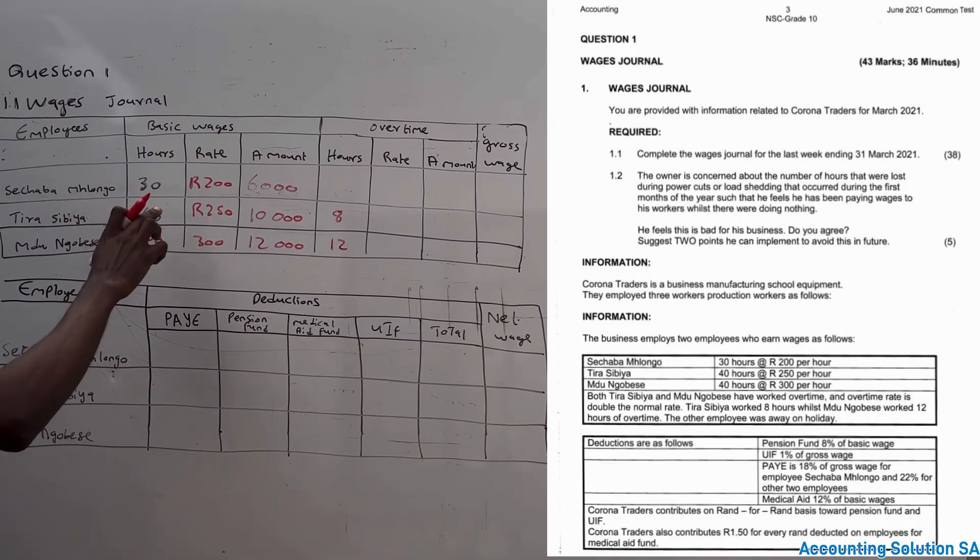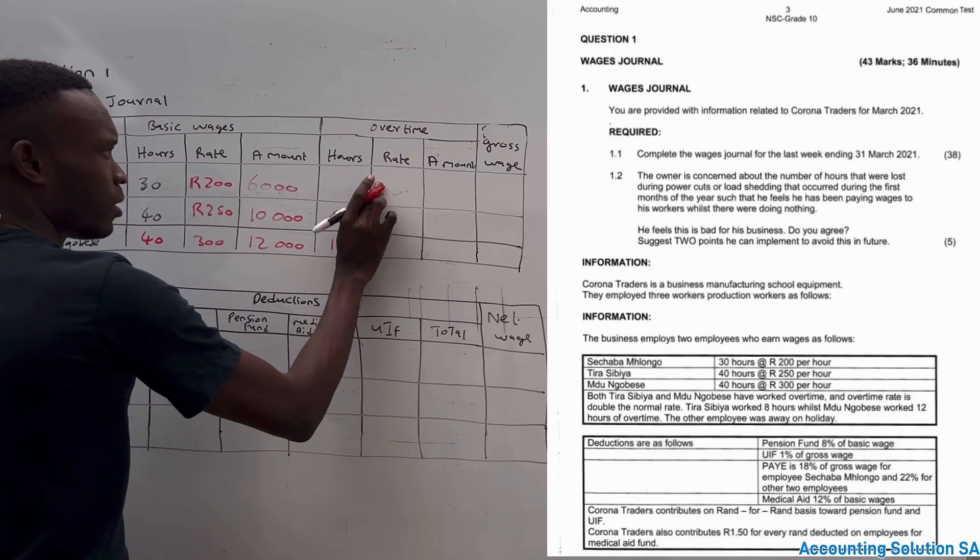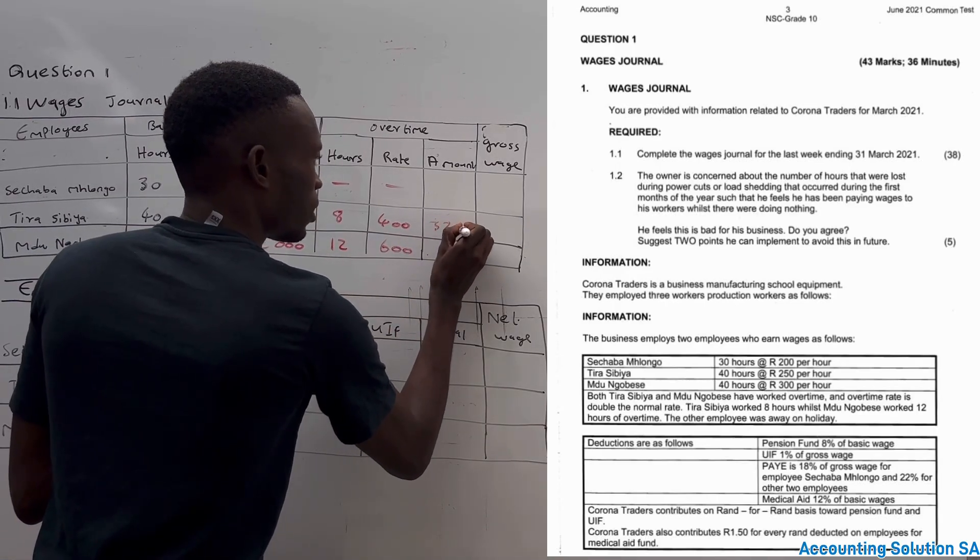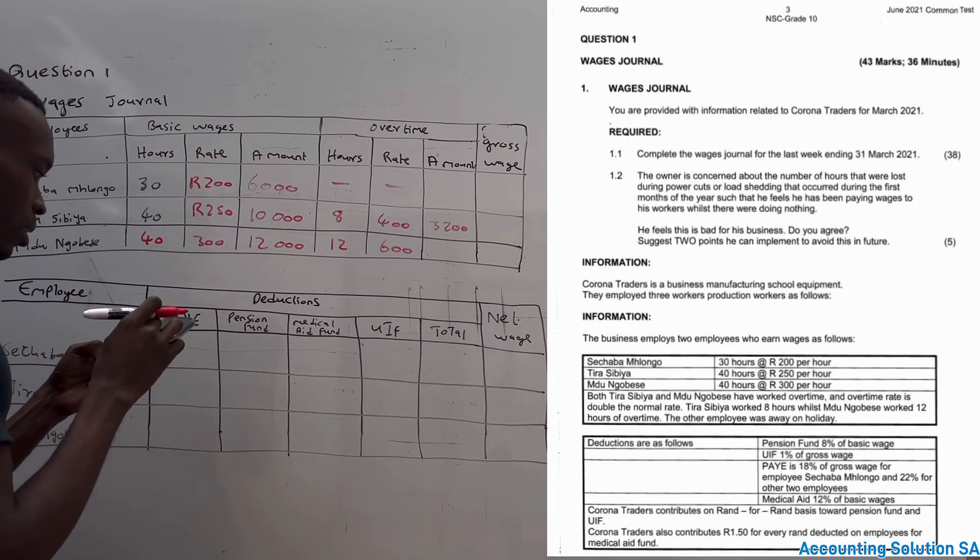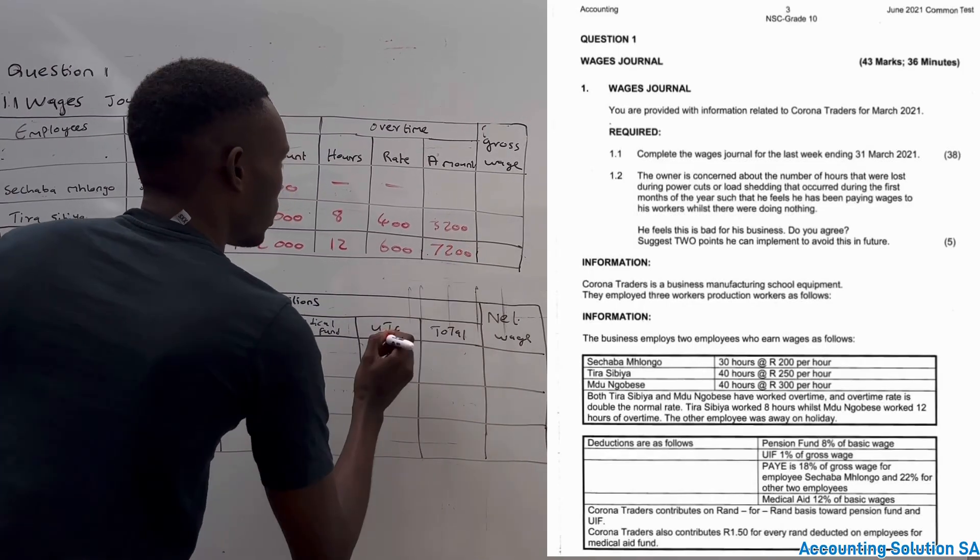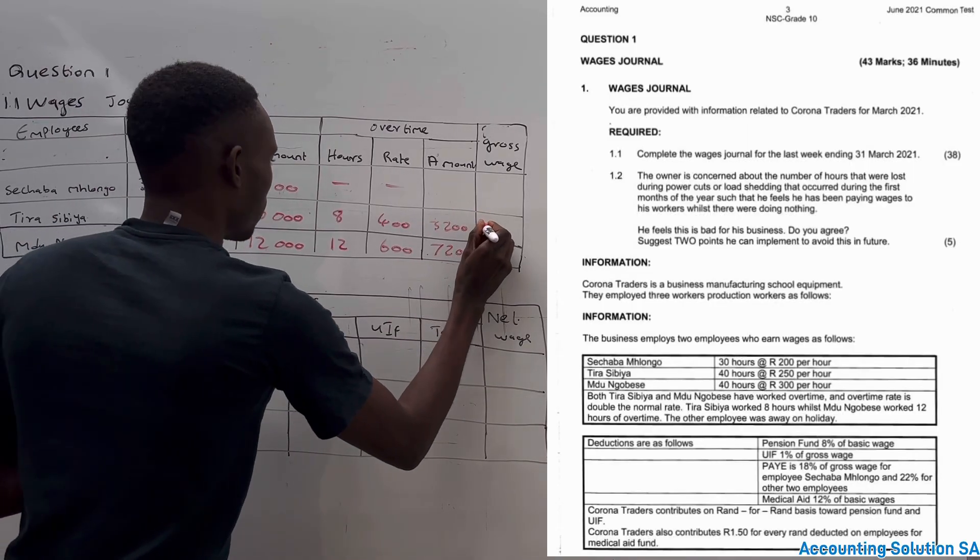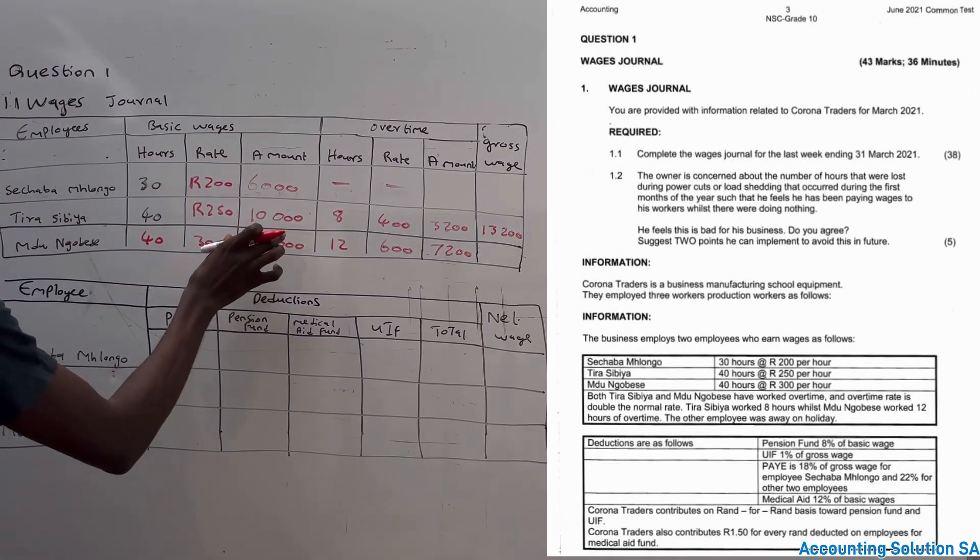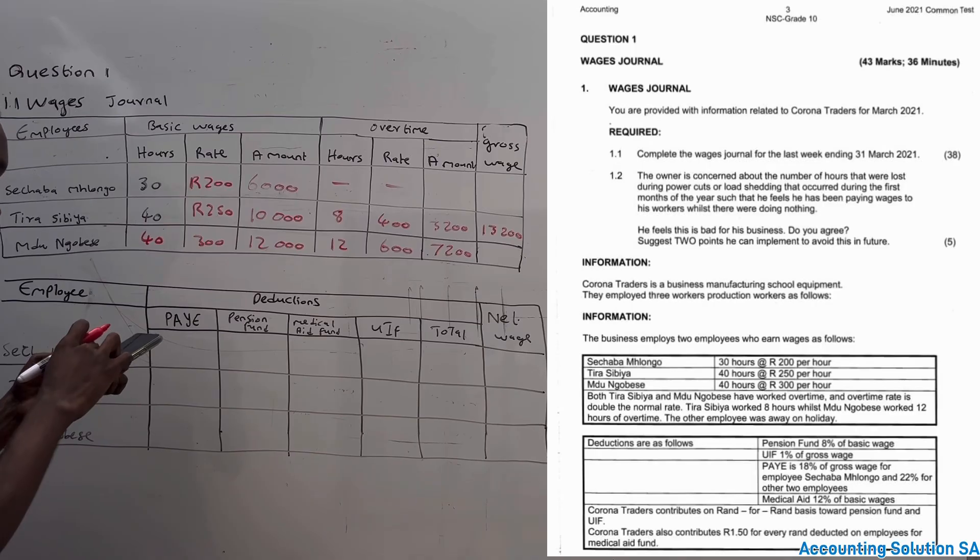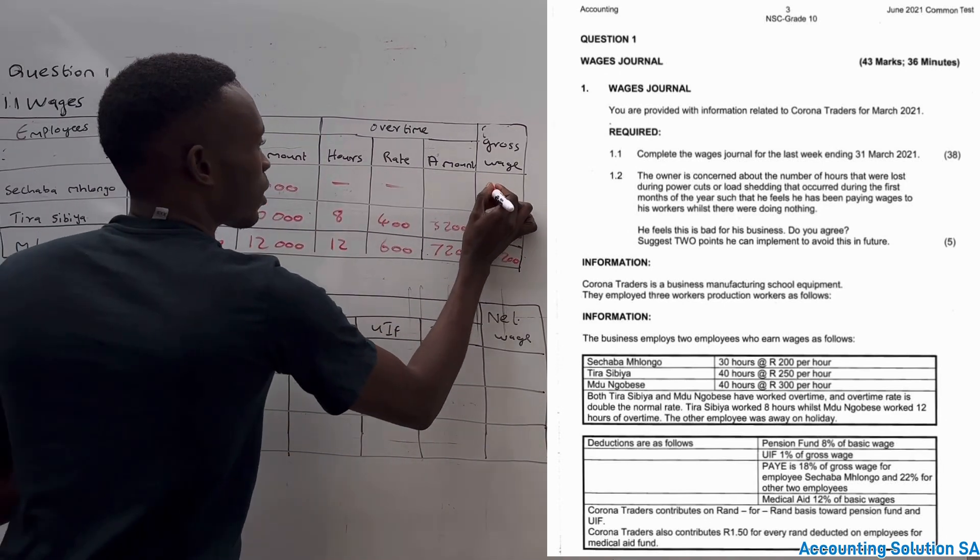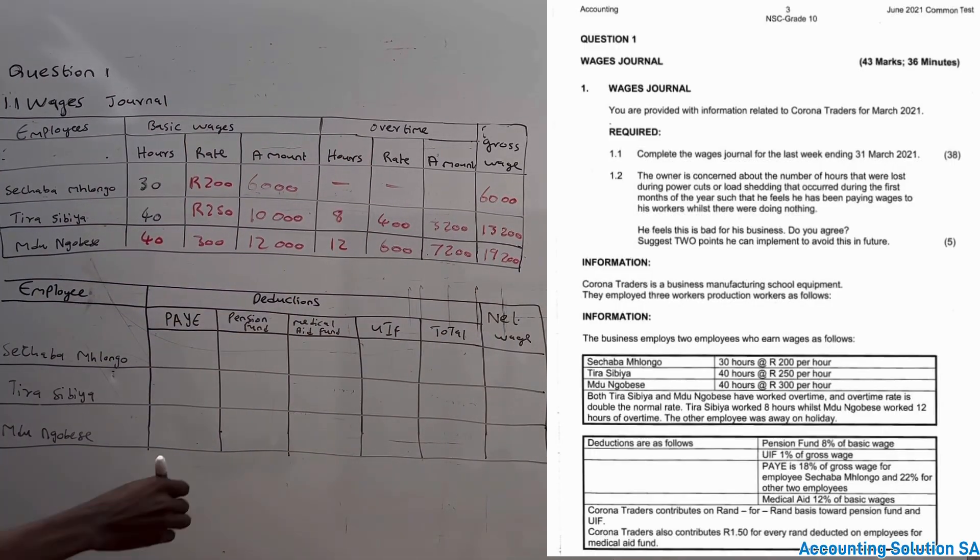Now the rate: this one is going to be 400 because they said it must be double. Remember this one didn't work overtime, and this one 300 will be 600. Now let's calculate it. Eight times 400 is going to be R3,200, and the other one 12 multiplied by 600 will be R7,200. Now we have to calculate gross wage. Gross wage: you take basic plus overtime. 10,000 plus 3,200 is going to give us 13,200. And this one 12,000 plus 7,200 will be 19,200. And this one will give us 6,000 because he does not have overtime.